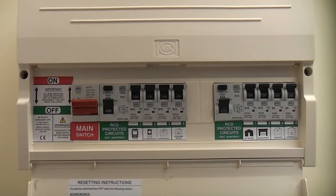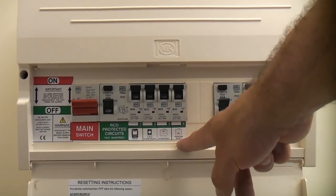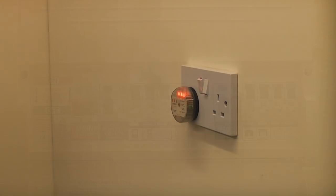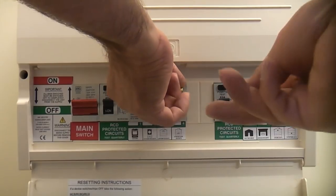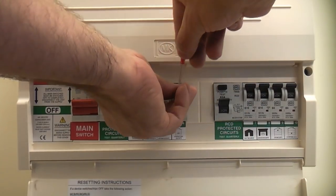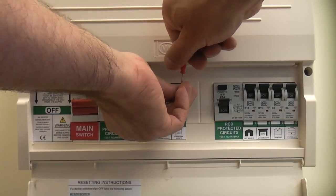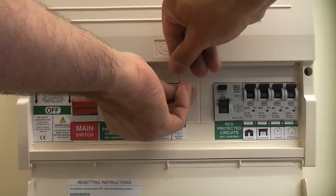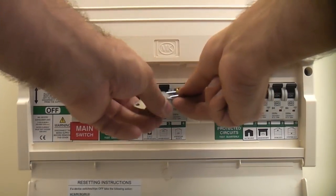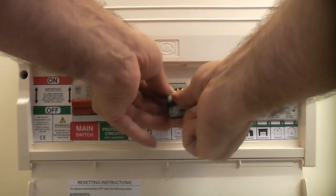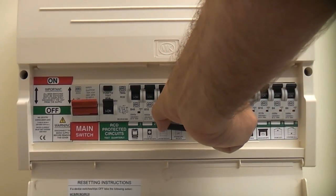I'm now at the consumer unit. I'm going to look for the MCB that does the downstairs sockets, which is this one. I'm now going to switch that off and then use a lock-off device to lock that in the off position. That will prevent anybody from switching that circuit back on again.